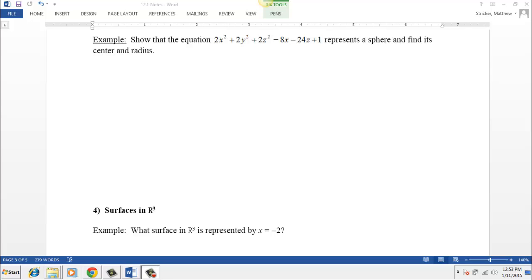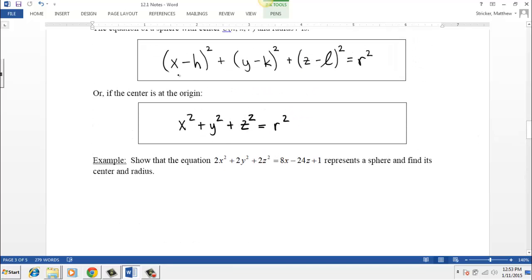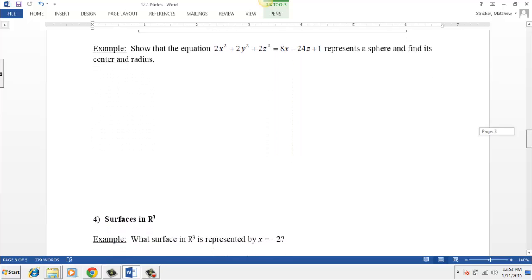what we really need to do is figure out a way to get it in this form up here that we talked about in class, the x minus h squared plus y minus k squared, and so on. So you may or may not have done something like this, but what we're going to need to do is complete the square.